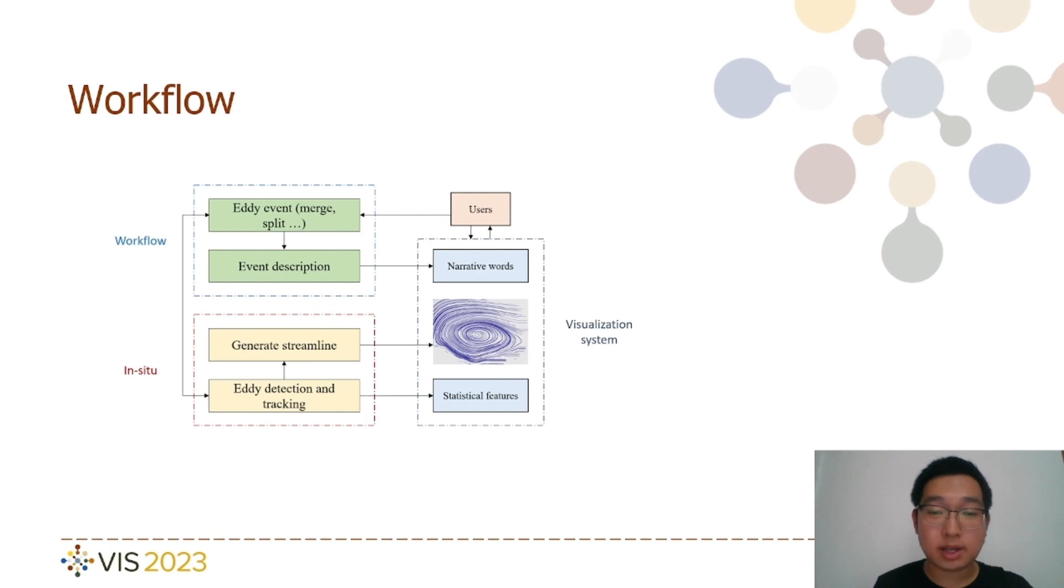The workflow model extracts keyword information related to events, creates a keyword table, and supplies it to the machine learning processing model. The machine learning processing model primarily employs the RNN and LSTM model to transform the keyword table into a narrative text description. The visual interface model offers users information such as images, texts, and features from other models for visual analysis.